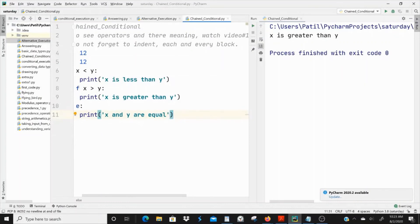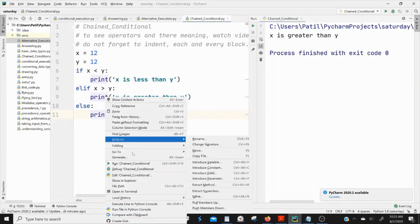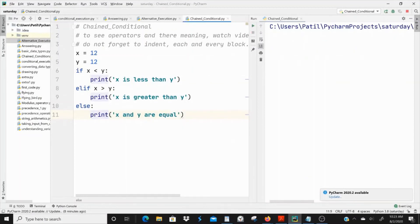See, x and y. Then it should go inside this else block and print x and y are equal. See, x and y are equal.